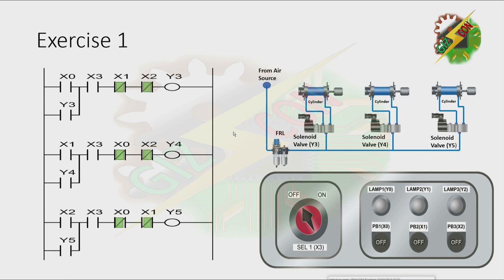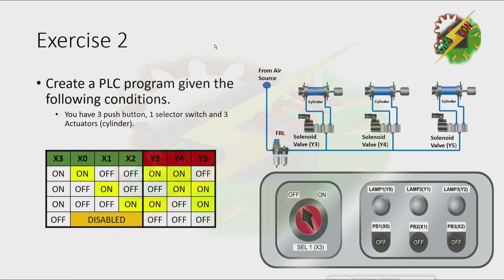Okay, now let's go to Exercise 2. Create a PLC program given the following conditions. You have 3 push buttons, 1 selector switch, and 3 actuators. The table is the same as the last exercise, but the difference is: when I press X0, instead of turning on Y3 alone, it will turn on both Y3 and Y4. When I energize X1, it will turn on Y4 and Y5. When I energize X2, it will turn on Y3 and Y5. The selector switch is used to disable all the buttons.